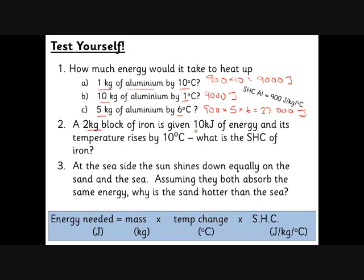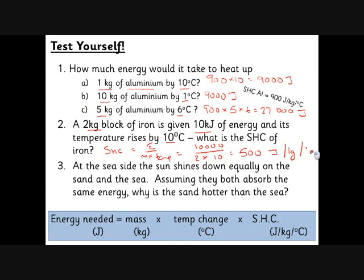A two kilogram block of iron is given 10,000 joules of energy and its temperature rises by 10 degrees C — what is the specific heat capacity? We rearrange the equation: specific heat capacity equals energy divided by mass times temperature rise. The energy was 10,000, the mass was 2, the temperature rise was 10, giving us 500 joules per kilogram per degree C.